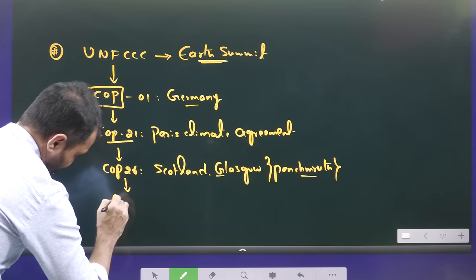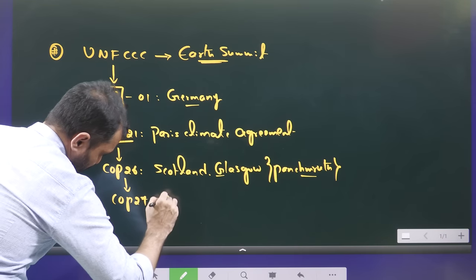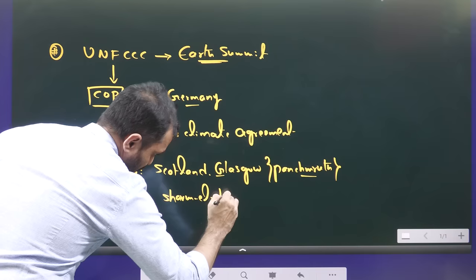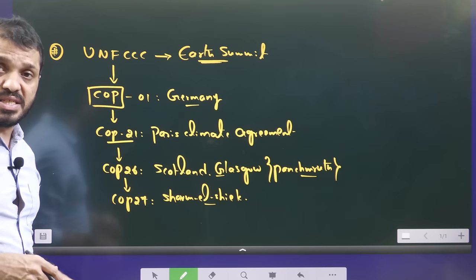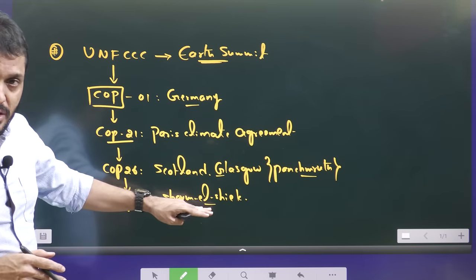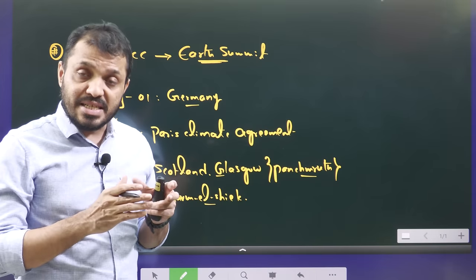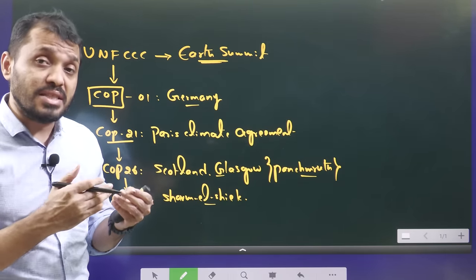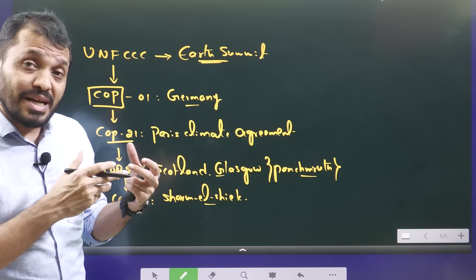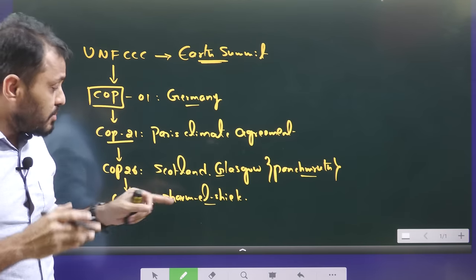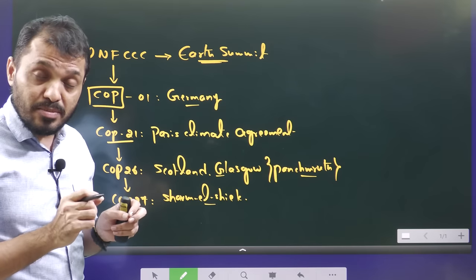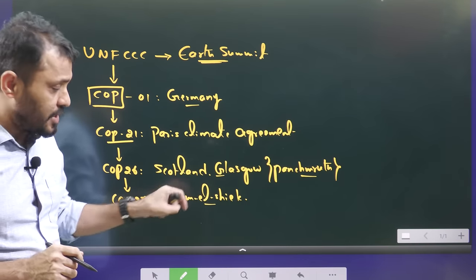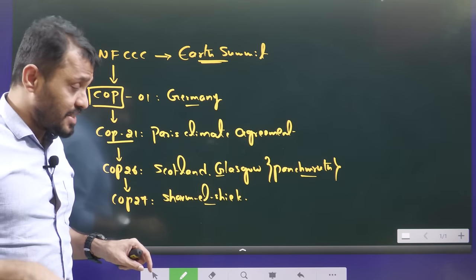Then COP27 was held last year at Sharm el-Sheikh, Egypt. Here, for the first time, countries discussed about loss and damage — not just prevention of climate change, but addressing damage already caused by climate action. As a result, the loss and damage fund was formulated, and it has now materialized in COP28.